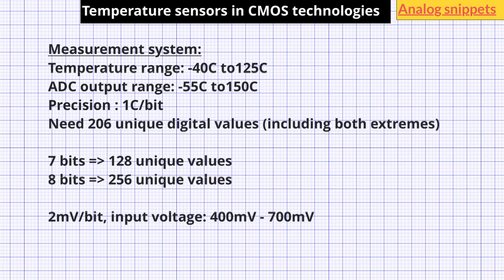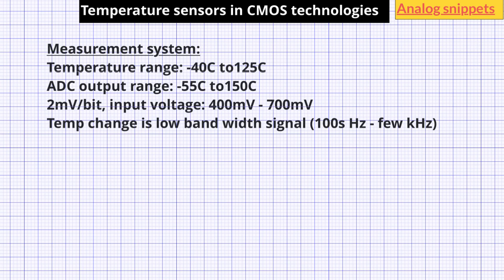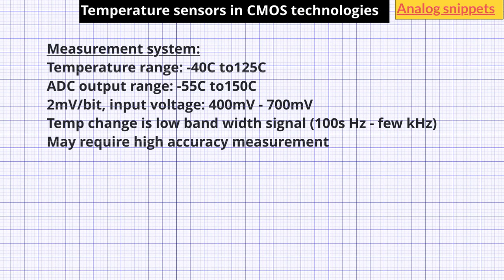Let's now consider a measurement system for a high accuracy temperature sensor. Temperature measurement is a low bandwidth system — die temperature changes slowly, taking hundreds of microseconds or even milliseconds to change appreciably, so signal bandwidth would be hundreds of hertz or at most a few kilohertz. At the same time, we may require a high level of accuracy, especially for sub-1°C accurate temperature sensors. These two conditions — low bandwidth and high accuracy — are perfect for using an oversampled ADC.